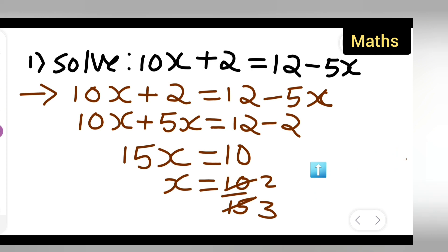So your answer is 2 upon 3. Therefore the value of x is 2 upon 3. So I hope you have understood how to solve the given equation and find the value of x. Thanks for watching.